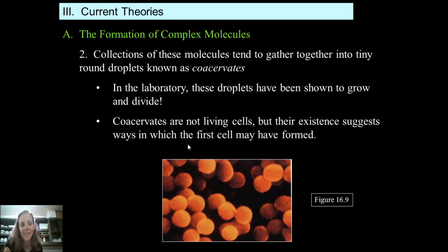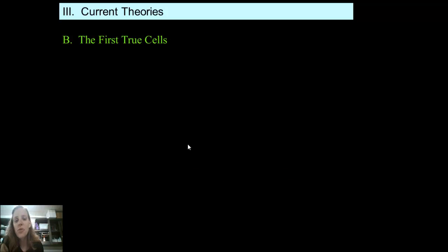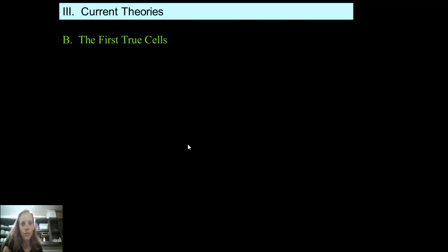It's pretty exciting. Coacervates aren't actually cells — they aren't actually alive. They're just precursors. So how in the world do we go from coacervates to actually true cells?